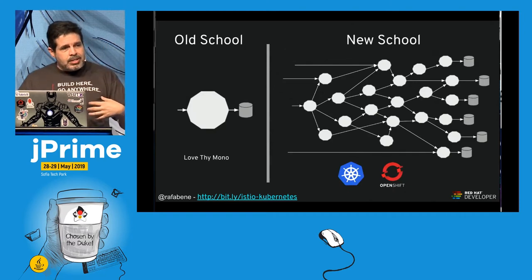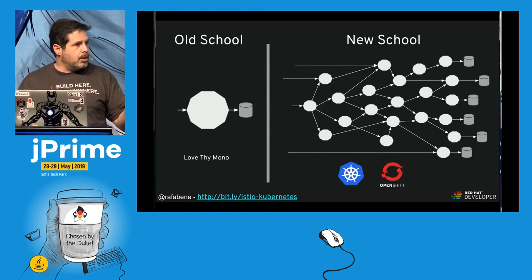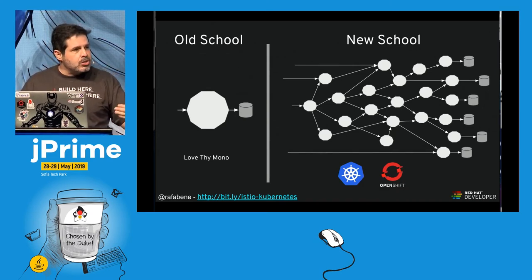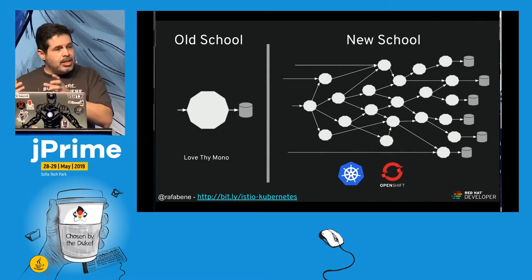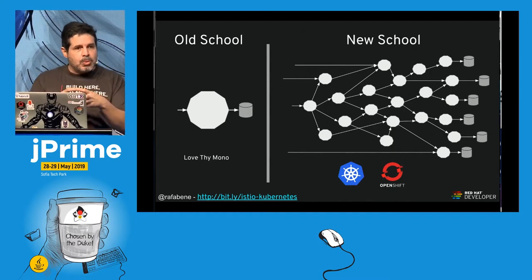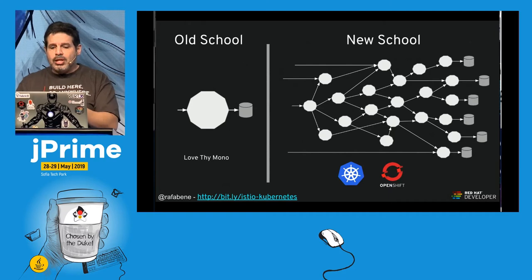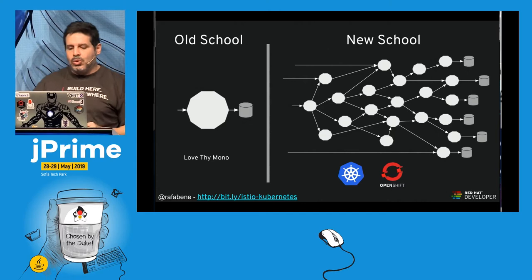Nowadays, we produce microservices — it's kind of old school to produce a monolith, though of course there are certain use cases that require one. In the new school, we take those microservices, place them inside containers, run those containers on OpenShift or Kubernetes — that's what's called the new school.